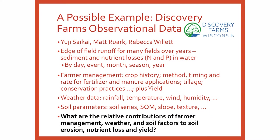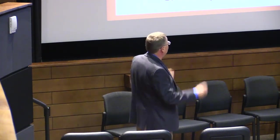Here's a possible example: I've been working with UG Psyche, a graduate student in AAE, and Matt Ruark in soil science, who's in charge of the Discovery Farms network. They've got tons of data from farmers cooperating in this network — edge-of-field runoff for many fields over many years, sediment and nutrient losses in the water by day, event, month, season, and year. You have the cropping history, methods, timing and rate of fertilizer, manure, tillage, weather data, and soil parameters. Now you can finally start teasing out with observational data what are the relative contributions of farmer management, weather, and soil factors to soil erosion, nutrient loss, and yield. We just had our first meeting on this, and I met Rebecca for the first time today — so this is still in the talk phase.